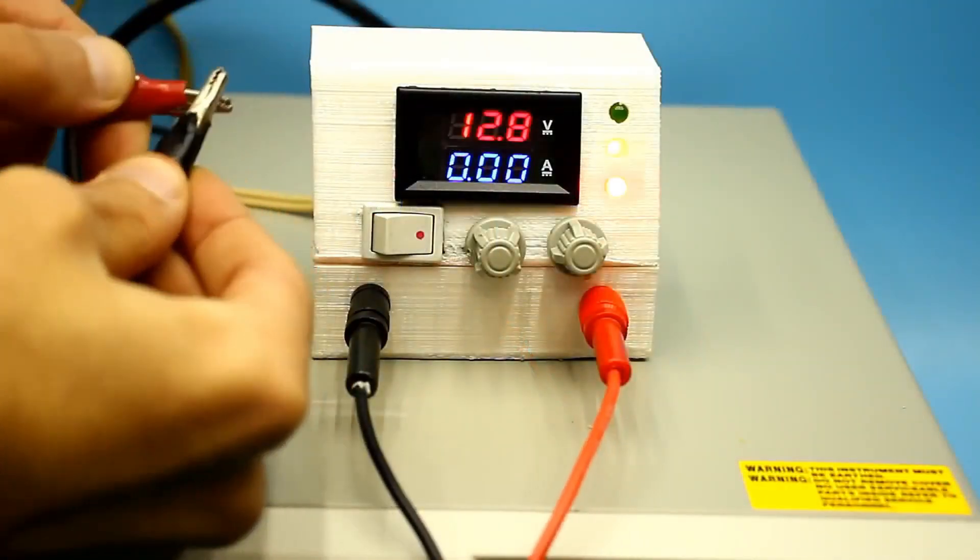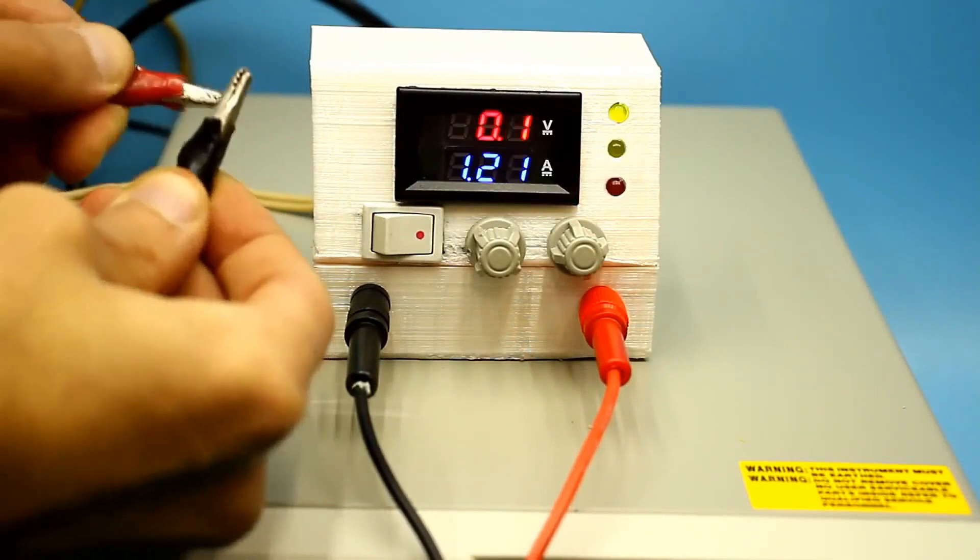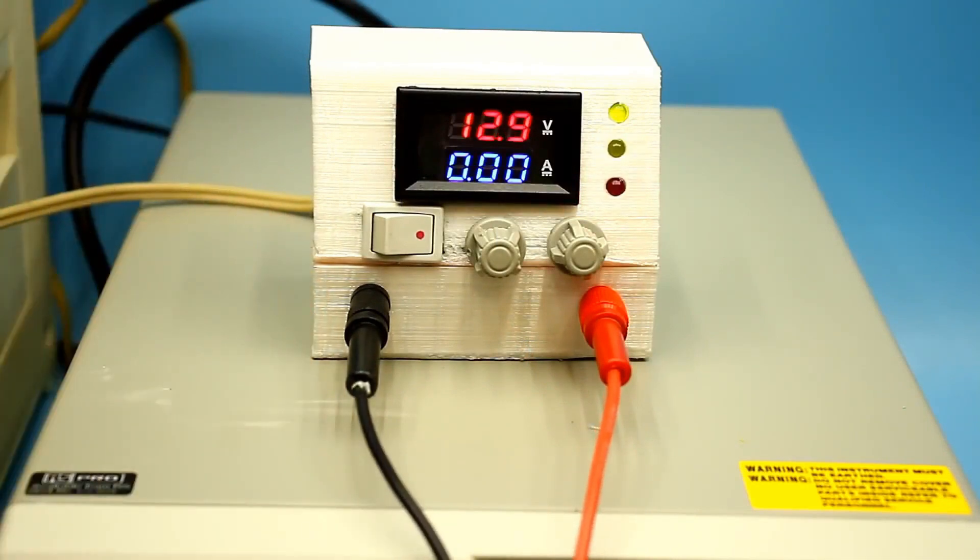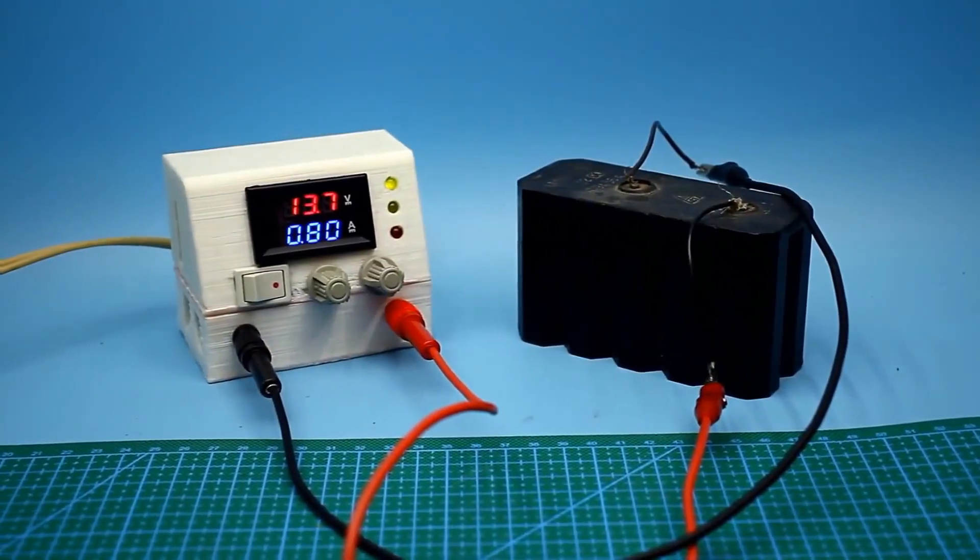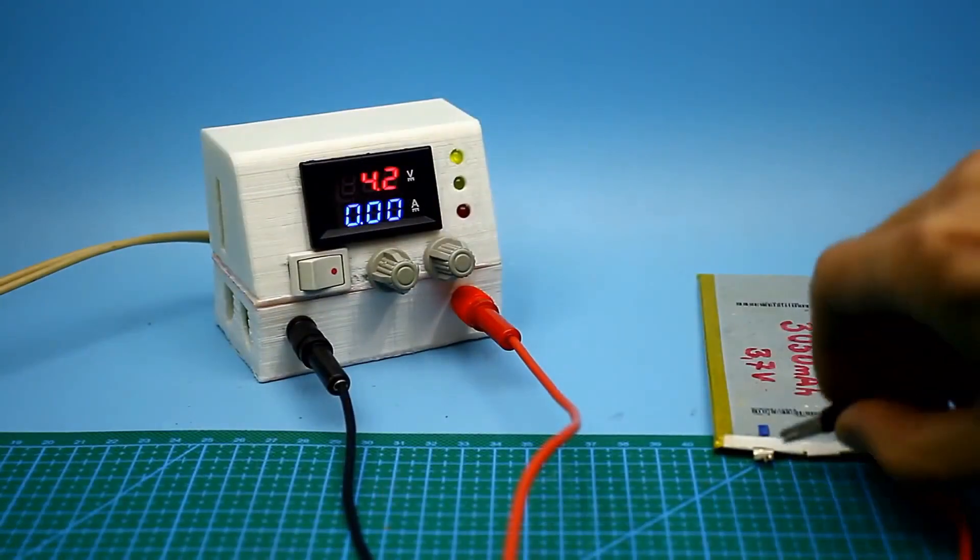Naturally, the unit is not afraid of short circuits, the current limit will simply activate. With its help, you can easily charge batteries of any type with stable current and voltage.